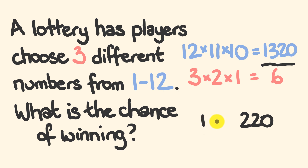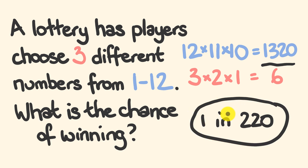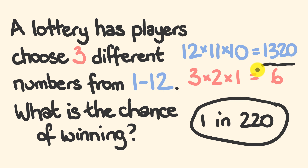We have a 1 in 220 probability of winning this game of chance. Nice and simple! Just to recap those steps: we're choosing 3 balls from 12, so starting with 12, we multiply 3 times in descending consecutive order. Then for our 3, we do the same descending consecutive order, multiply again, and divide one into the other to get our probability.